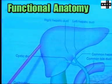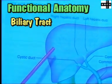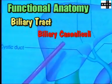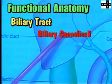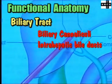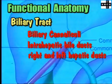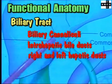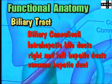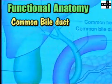Gallstones: Functional anatomy. The biliary tract begins in the biliary canaliculi, which are formed by the arrangement of hepatocytes. They join to form the intrahepatic bile ducts that join progressively to form the right and left hepatic ducts. They emerge from the liver to form the common hepatic duct and then join the cystic duct to form the common bile duct.